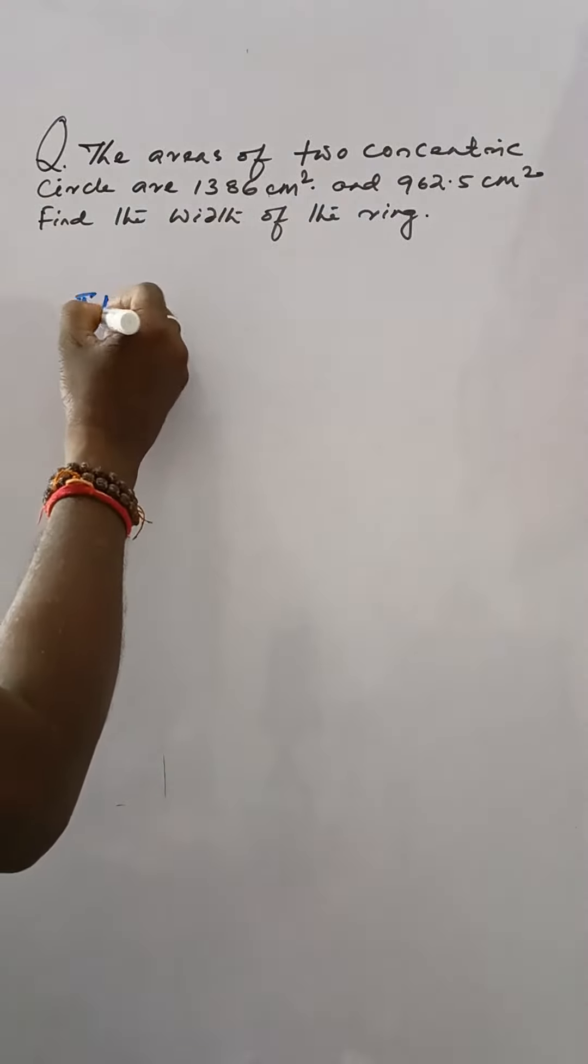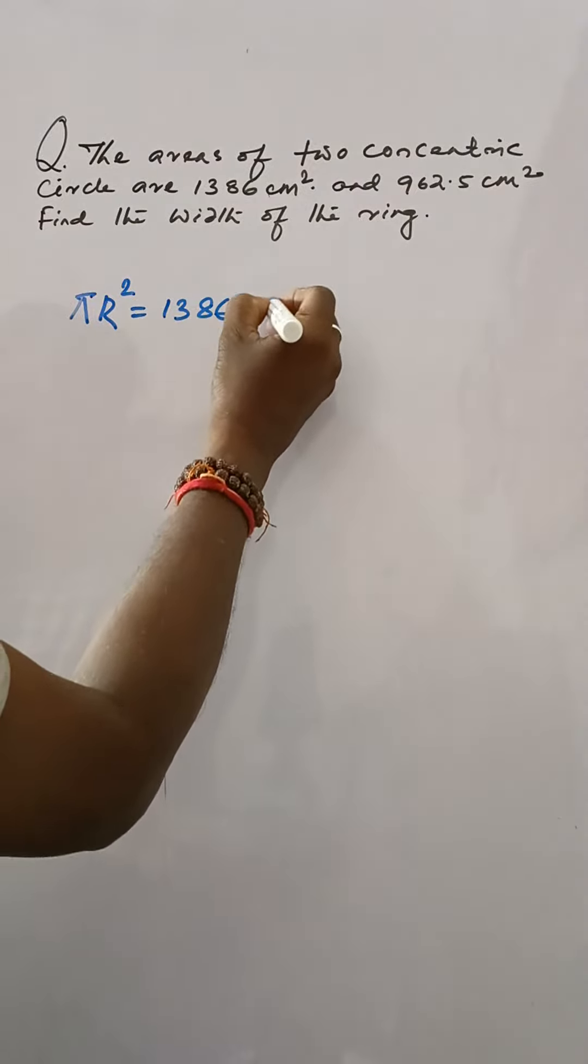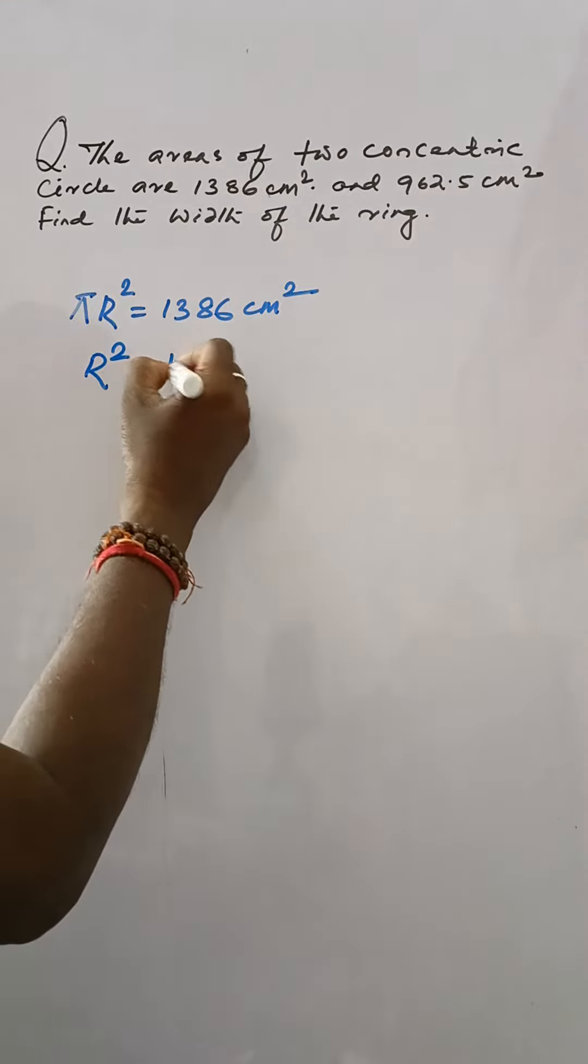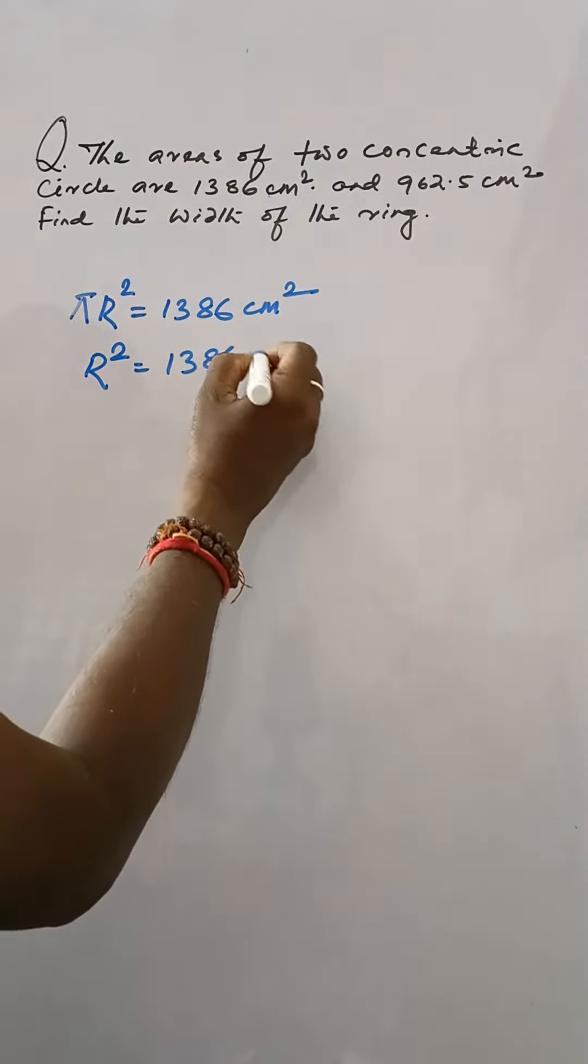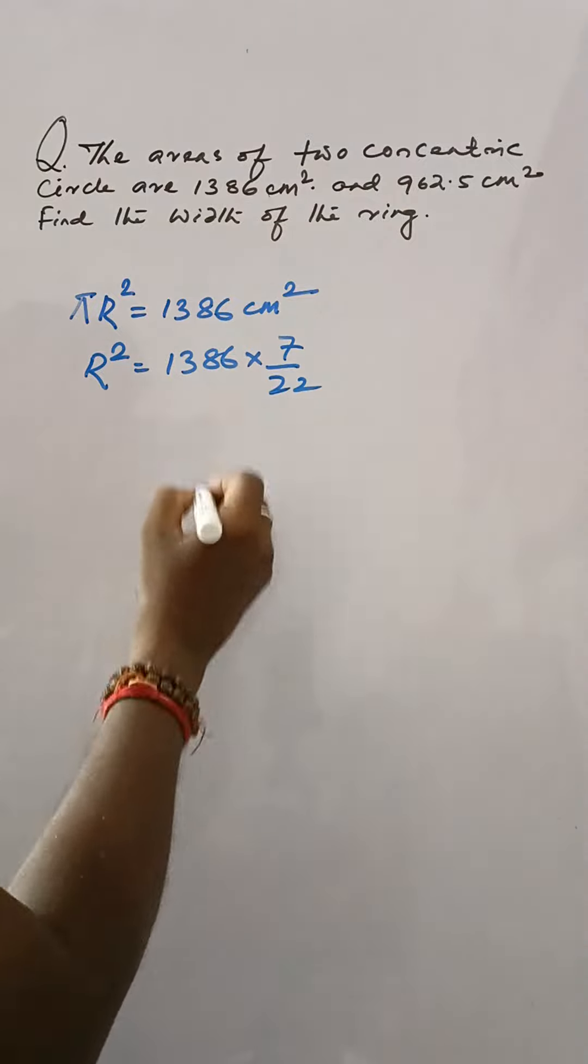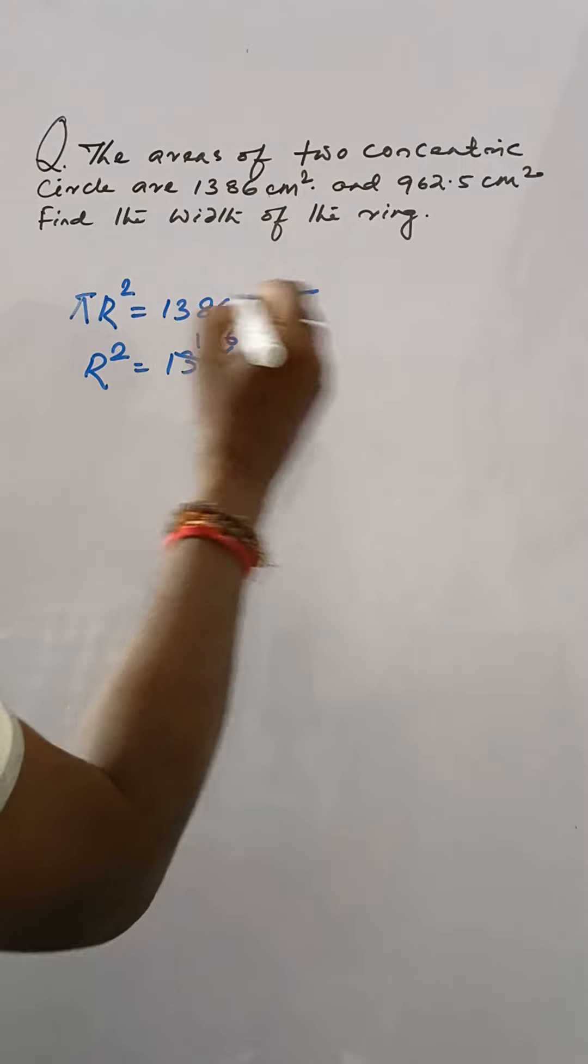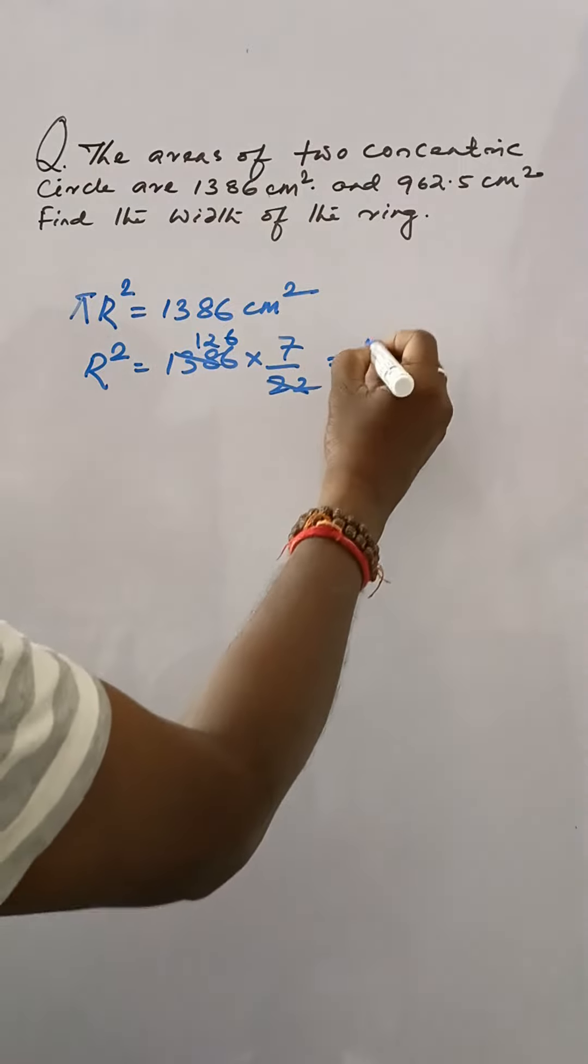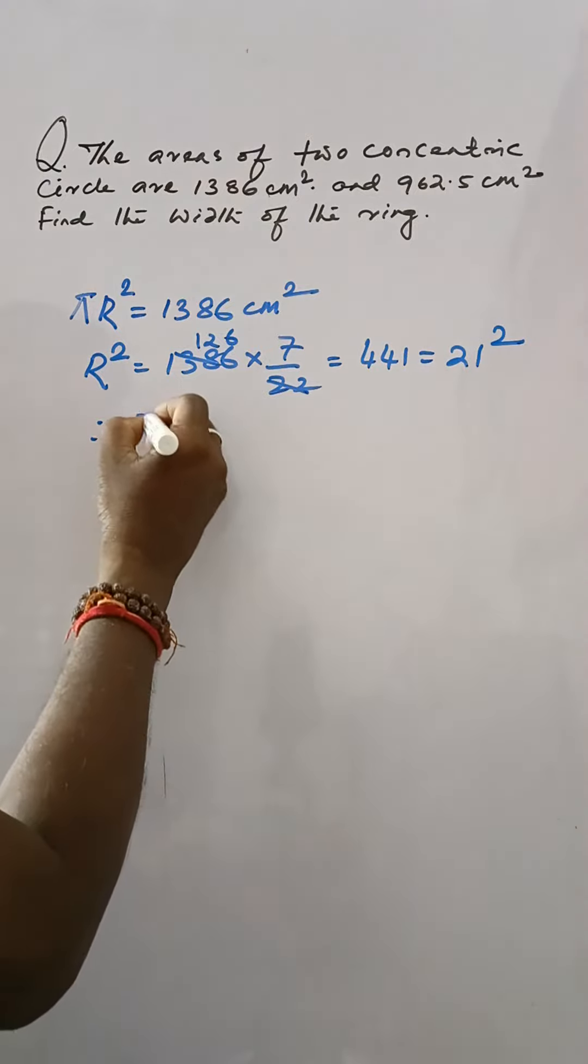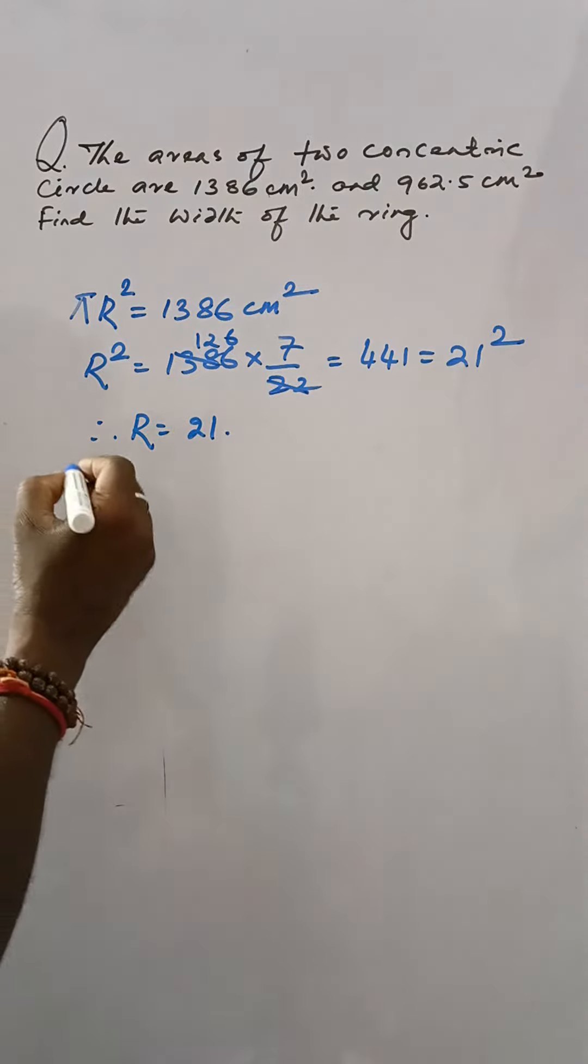pi r² is equal to 1386 cm². Then r² is equal to 1386 into 7 by 22. Then by cancelling, this is 126, 441 that means 21 square. Therefore, r is equal to 21. In second case,